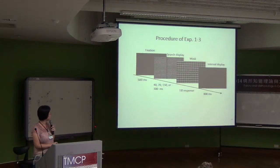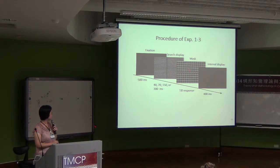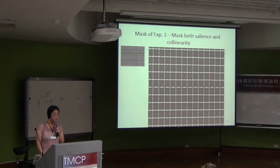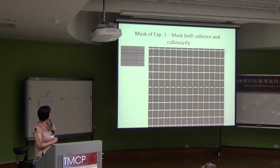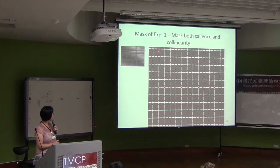The procedure with mask is as follows: we have a fixation display, then the search display with the target comes on. After 40, 70, 100, 150, or 300 milliseconds, the mask is displayed. Then the subject responds. The response time is measured from the search display onset until they make the response, and then the next trial starts after an interval. The mask in Experiment 1 covers all possible collinear bar locations across the display, including horizontal locations. In this case, the collinearity information is masked.